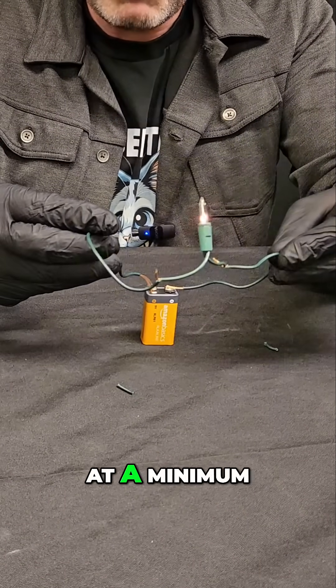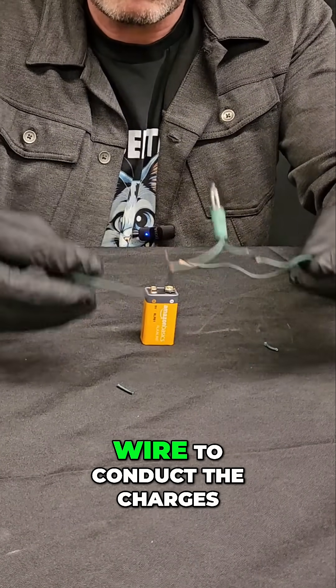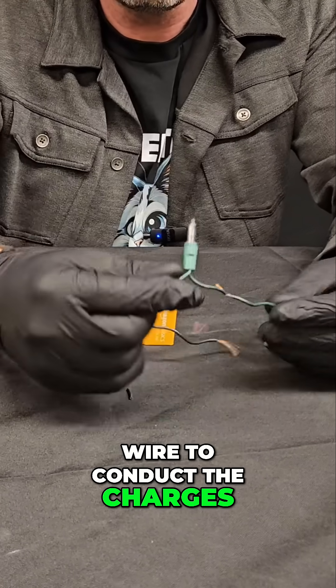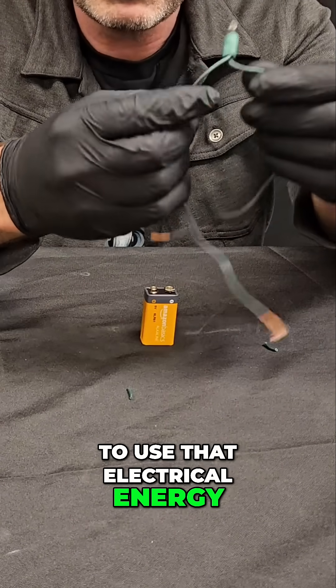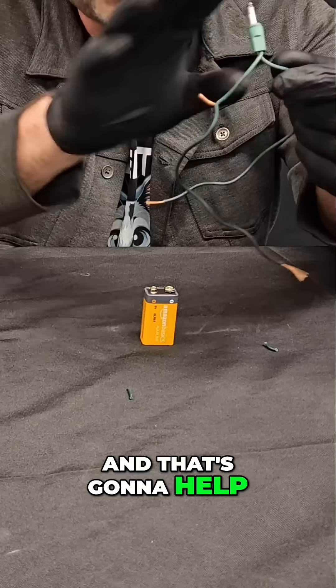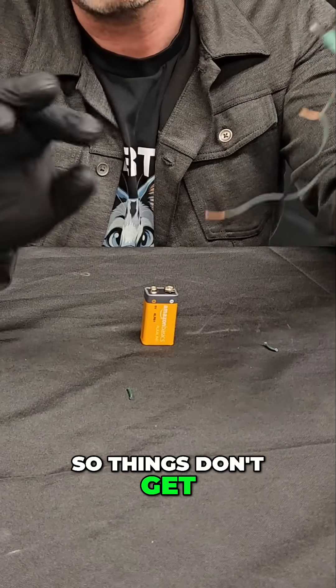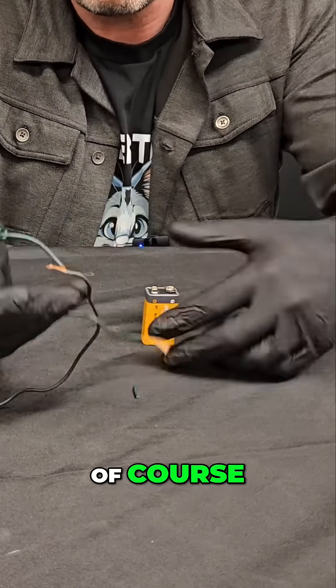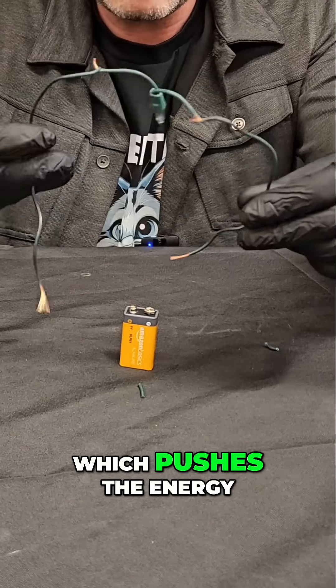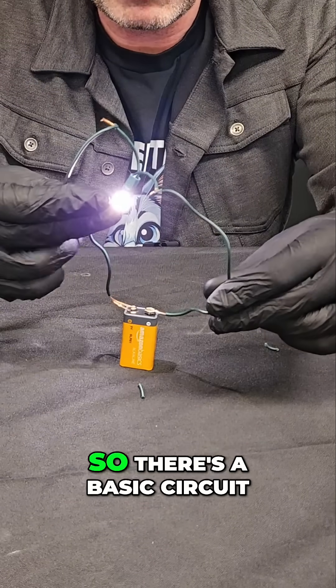At a minimum, a circuit should have wire to conduct the charges, some kind of device to use that electrical energy—in this case a light bulb, which helps slow the current down so things don't get super hot or catch fire—and then you need the voltage source, which pushes the energy through the wire. So there's a basic circuit.